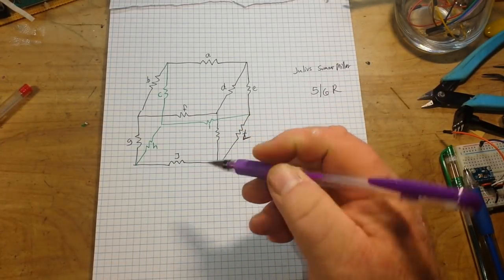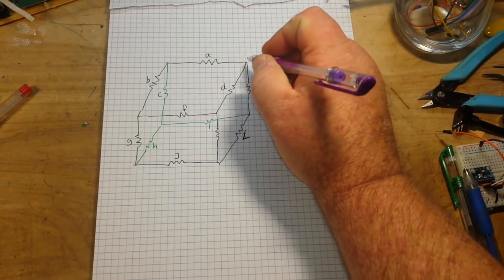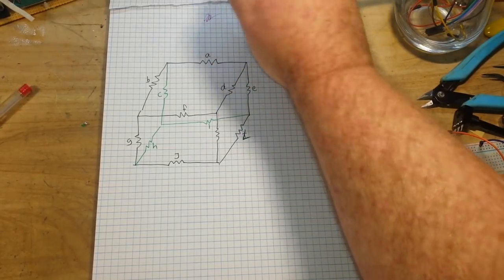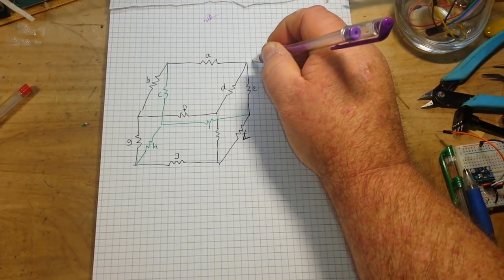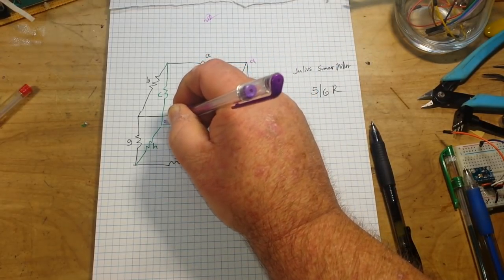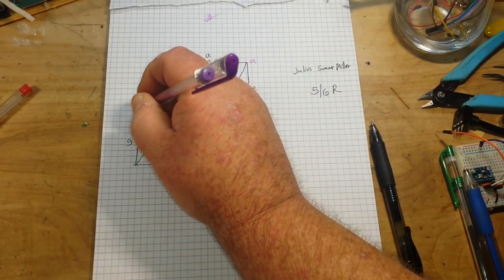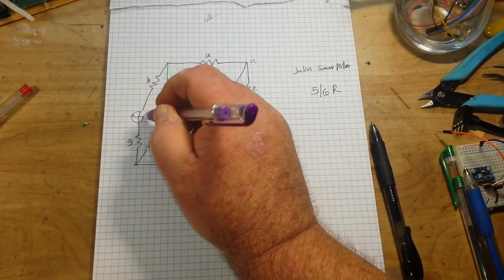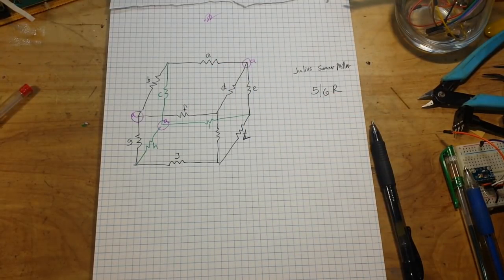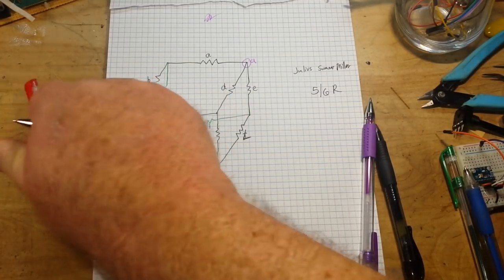So hopefully you can see the colors. Let's grab the purple pen. We'll call this alpha here, alpha here, and alpha here. So these nodes, our purple nodes, can be shorted out. There is zero potential between them.